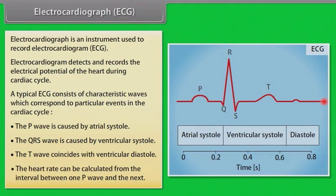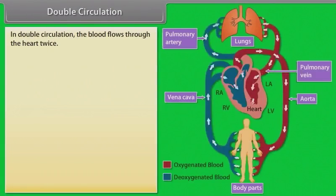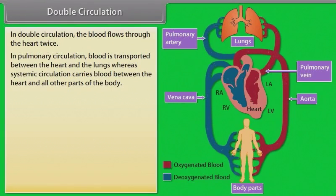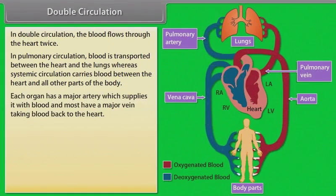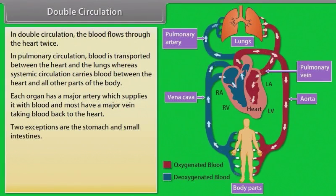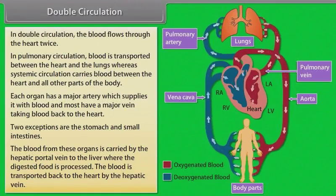In double circulation, blood flows through the heart twice. In pulmonary circulation, blood is transported between the heart and the lungs. Systemic circulation carries blood between the heart and all other parts of the body. Each organ has a major artery supplying it with blood and a major vein taking blood back to the heart. Two exceptions are the stomach and small intestines, whose blood is carried by the hepatic portal vein to the liver where digested food is processed, then returned to the heart by the hepatic vein.